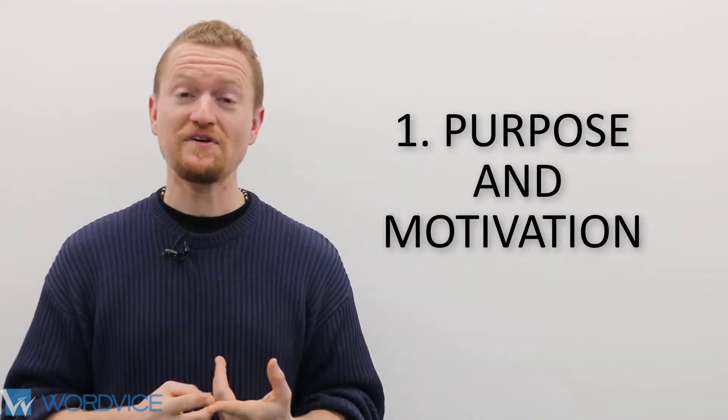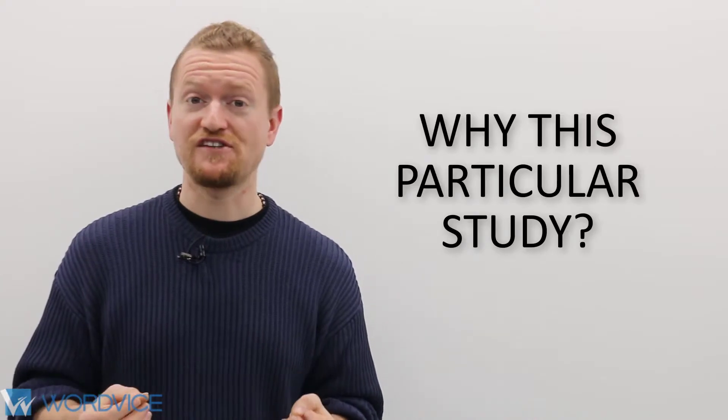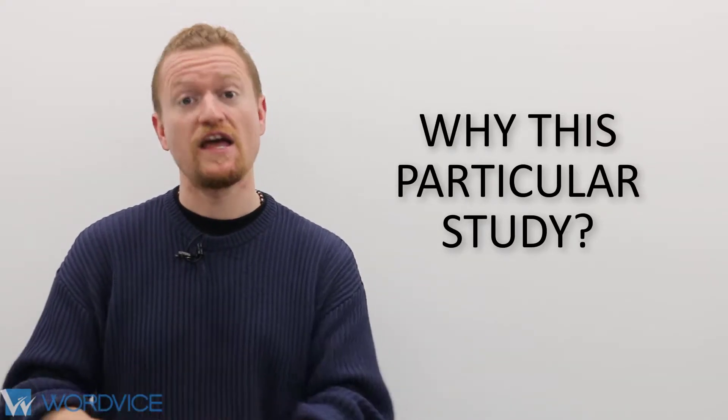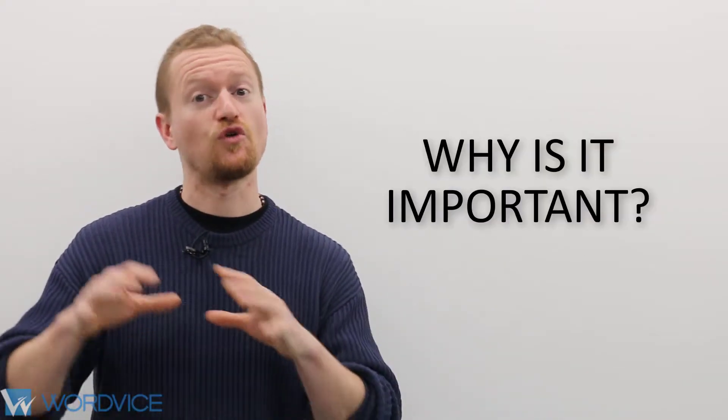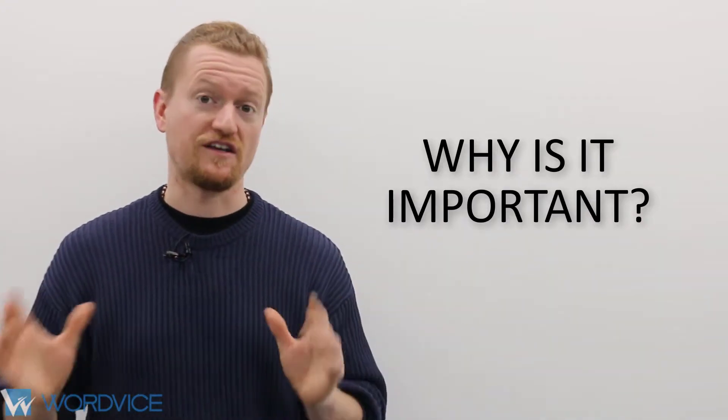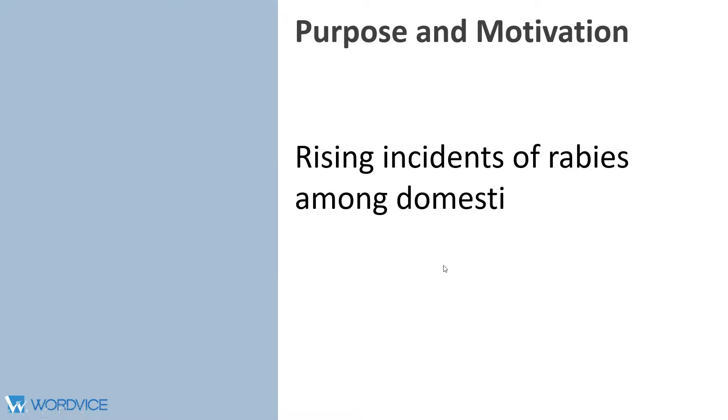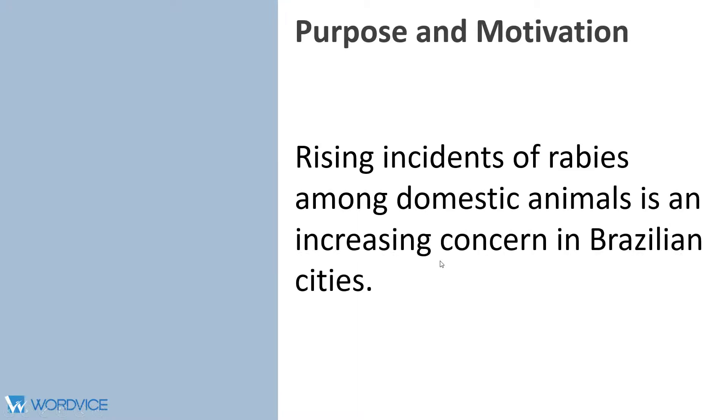In section one, you need to identify the purpose and motivation of your study. Now right off the bat, you need to get the reader's attention. So clearly state both your motivation for study and the purpose of your study. Why did you decide to do this particular study and why is it important to your area of study or a wider audience? So your motivation sentence might look something like this: Rising incidence of rabies among domestic animals is an increasing concern in Brazilian cities.